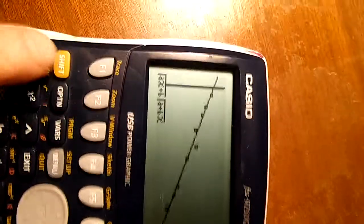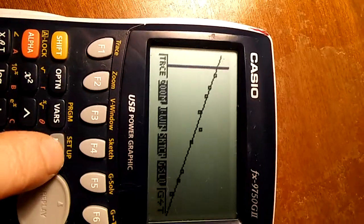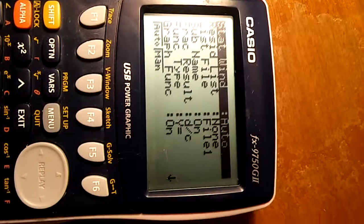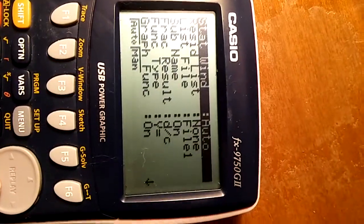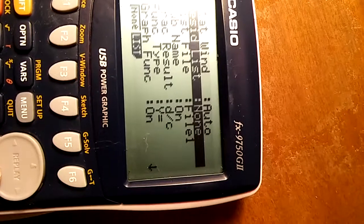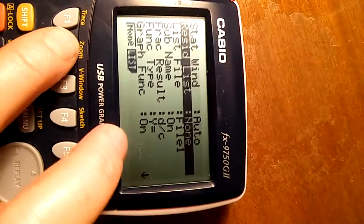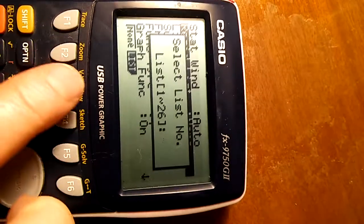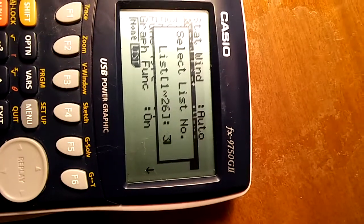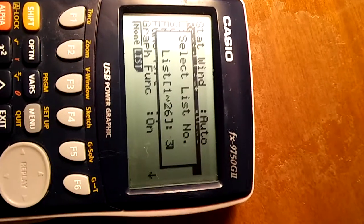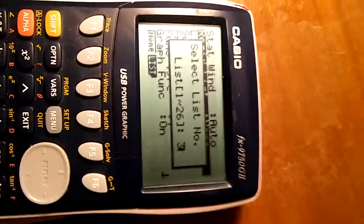Now we've got this setting. If you come down to where it says resid list, it probably says none at the moment. If you change that to F2 to put them in list, let's put them in list 3. Don't put them in list 1 or 2 or it will type over your data. Put them in list 3 or 4, and then press the blue button.